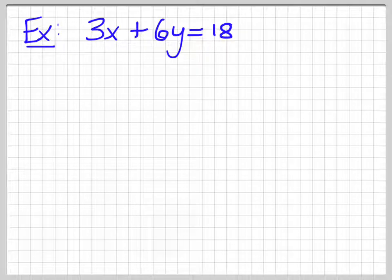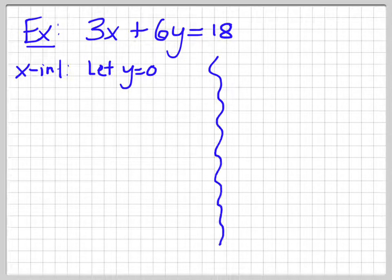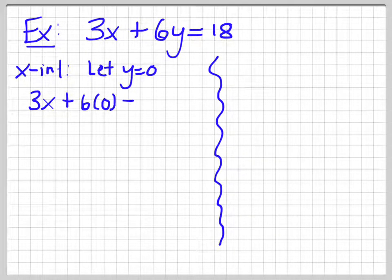So, to find the x intercept, what you need to do is let y equals 0. So, a bus just drove by, so I don't know if you guys heard that or not. So, when I let y equal 0, you can see what happens. I get 3x, so my 3x is not touched, plus 6 times 0 is equal to 18.